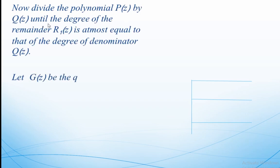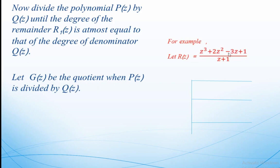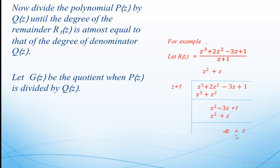Now, divide the numerator p(z) by the denominator q(z) until the degree of the remainder r(z) is at most equal to the degree of the denominator q(z). Let g(z) be the quotient when p(z) is divided by q(z). For example, suppose r(z) = (z³ + 2z² − 3z + 1)/(z + 1). Divide the numerator by the denominator using polynomial division until the degree of the remainder equals the degree of the denominator.